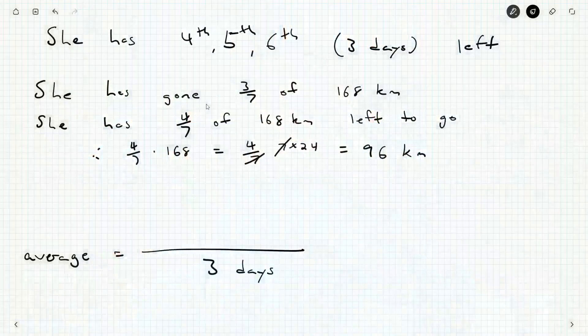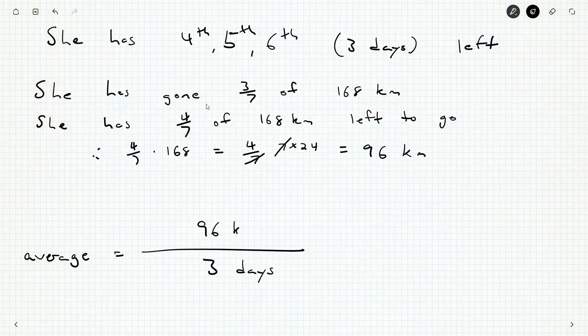So she's got 96 kilometers to go, three days to go as well. So what is the average for her remaining days? 96 over three. Well, nine over three is three, six over three is two. So 32 kilometers per day is what she must average now.